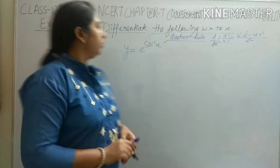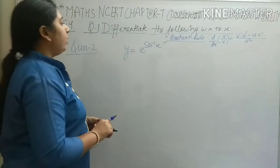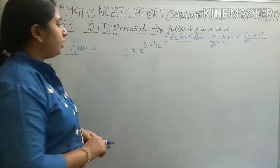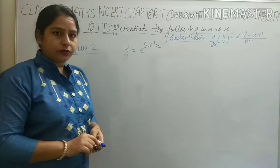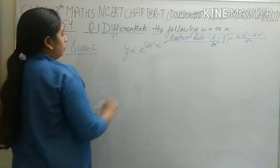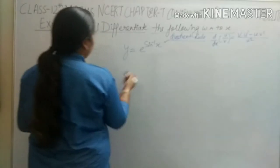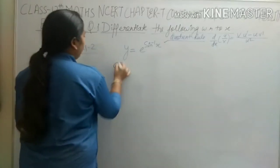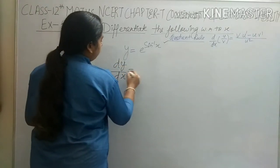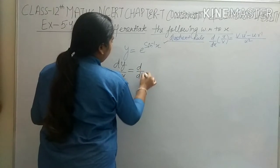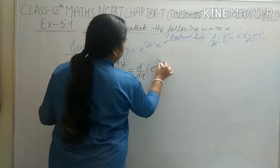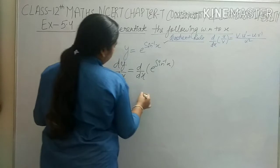Question number 2: y equals e raised to power sine inverse x. We need to differentiate it with respect to x. On differentiating with respect to x, we will get dy/dx equals d/dx of e raised to power sine inverse x.